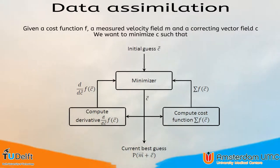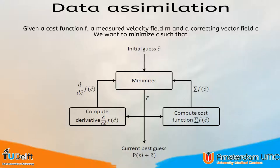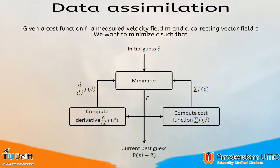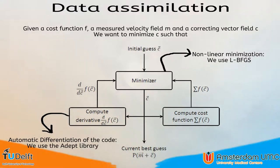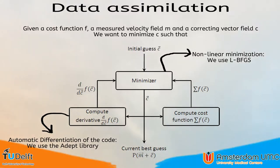We solve the minimization by using an iterative process. Every iteration, the cost function is computed as well as the derivative of the cost function. By using both the cost function and its derivative, the minimizer can continuously keep updating the current best guess. The minimization iterates until either the gradient value drops below a threshold or the value of the cost function did not decrease sufficiently in the last few iterations. Since the cost function is non-linear, we use a quasi-Newton method — more precisely, LBFGS. For the computation of the derivative, we use automatic differentiation of the code. This way, only the model needs to be implemented with some restrictions and we get the derivative for free.